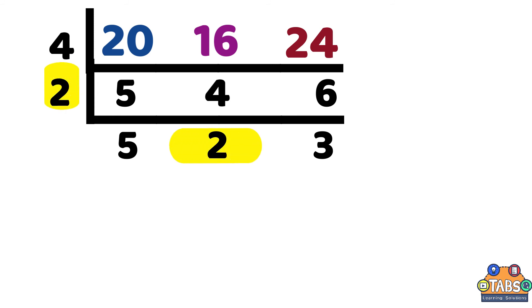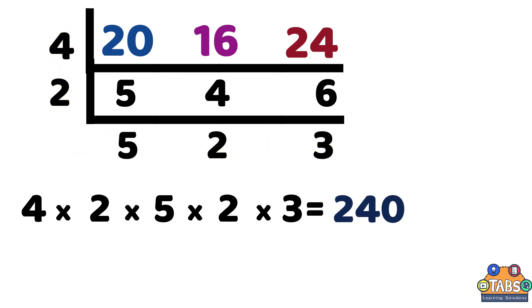Then, multiply the numbers in the L-shape. So, we multiply 4 times 2 times 5 times 2 times 3. So, the LCM will be 240.